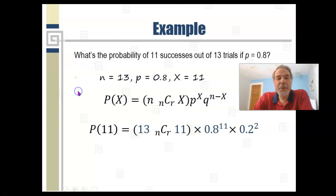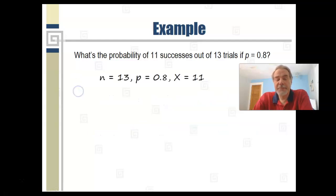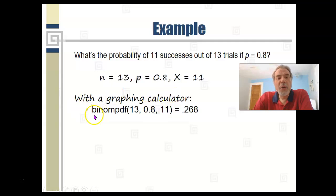For example, you can use a graphing calculator. You would ask it for binom PDF, and you would give it the numbers for N and P and X in that order, and it would give you the answer, the probability. Let me show you what that looks like.